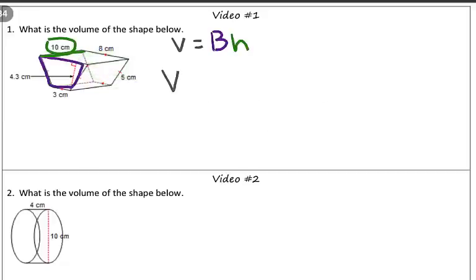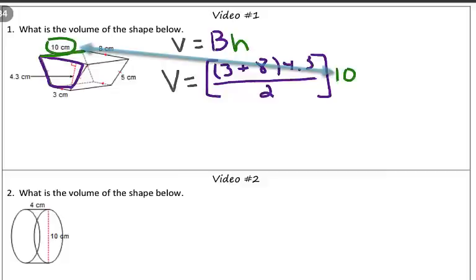Starting off, we know volume is equal to the area of the base. Well, since the base is a trapezoid, to calculate this area, the area of a trapezoid is base 1 plus base 2 times your height divided by 2. And we're going to multiply this by the height of the prism, which is 10 centimeters.